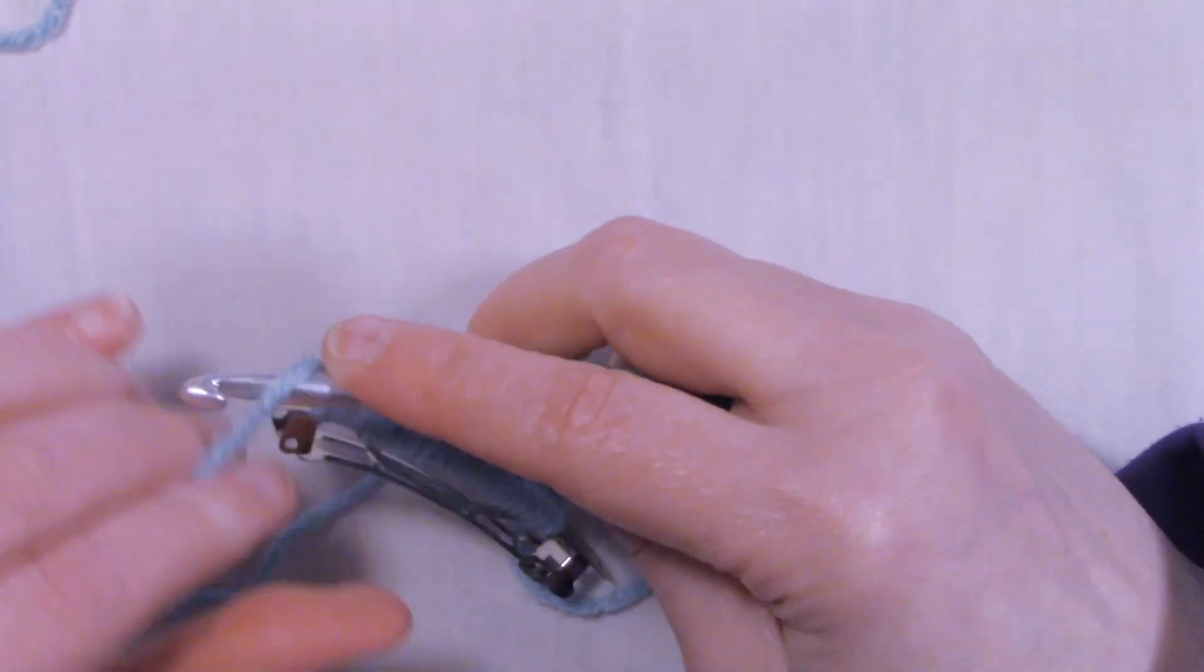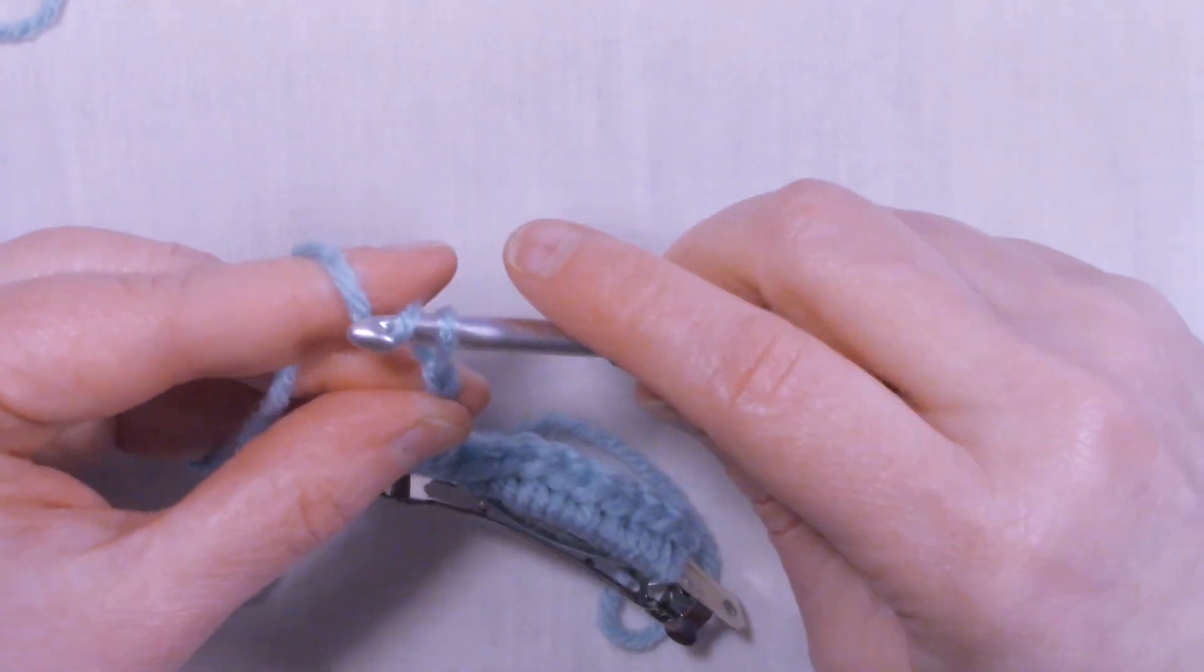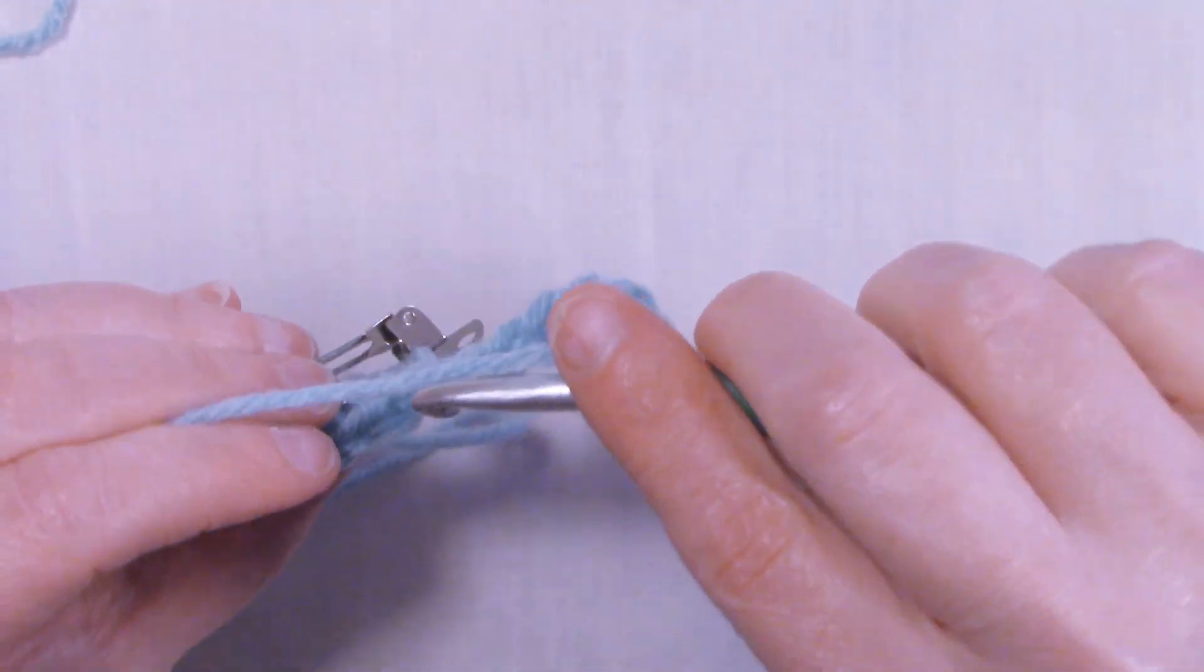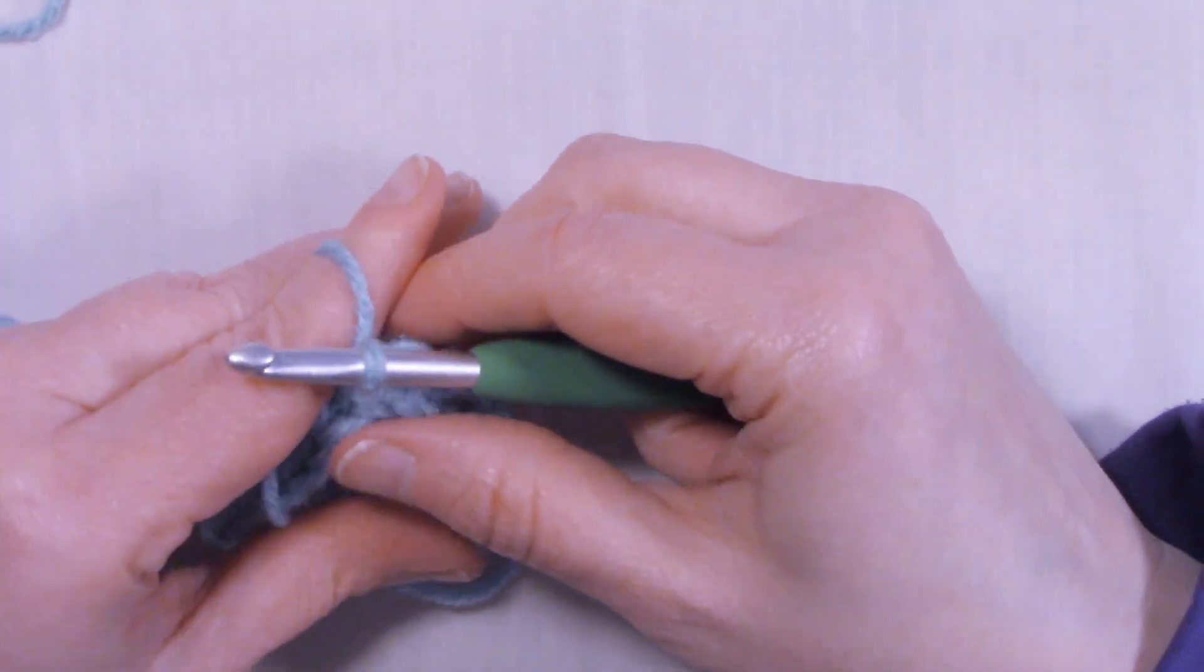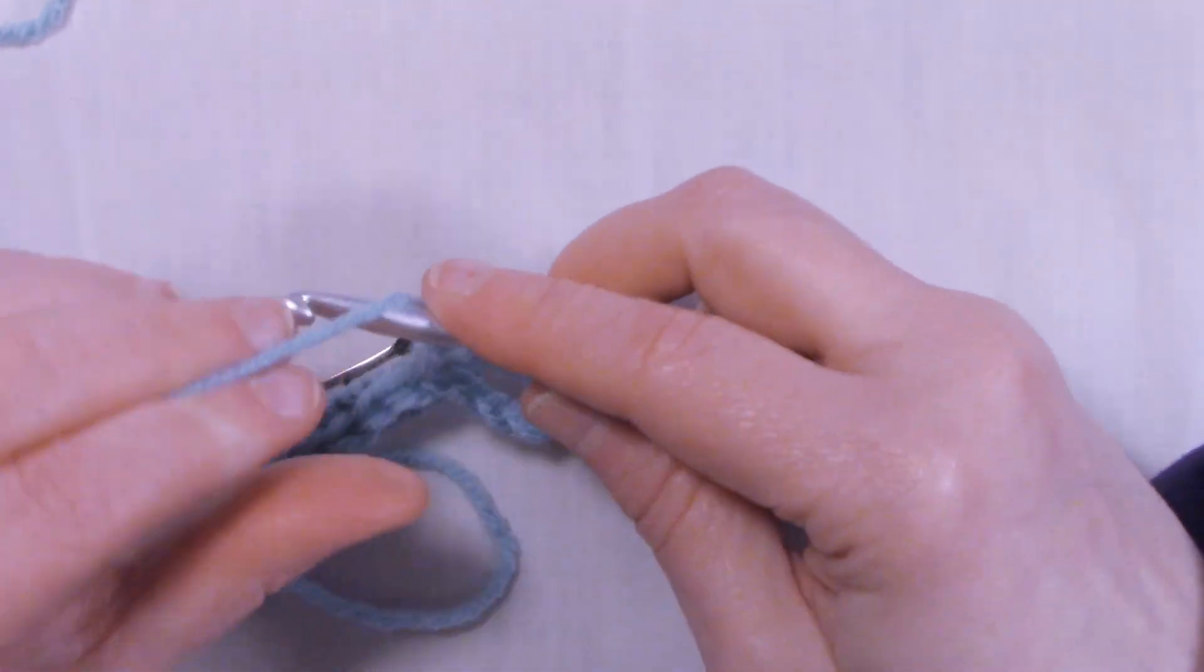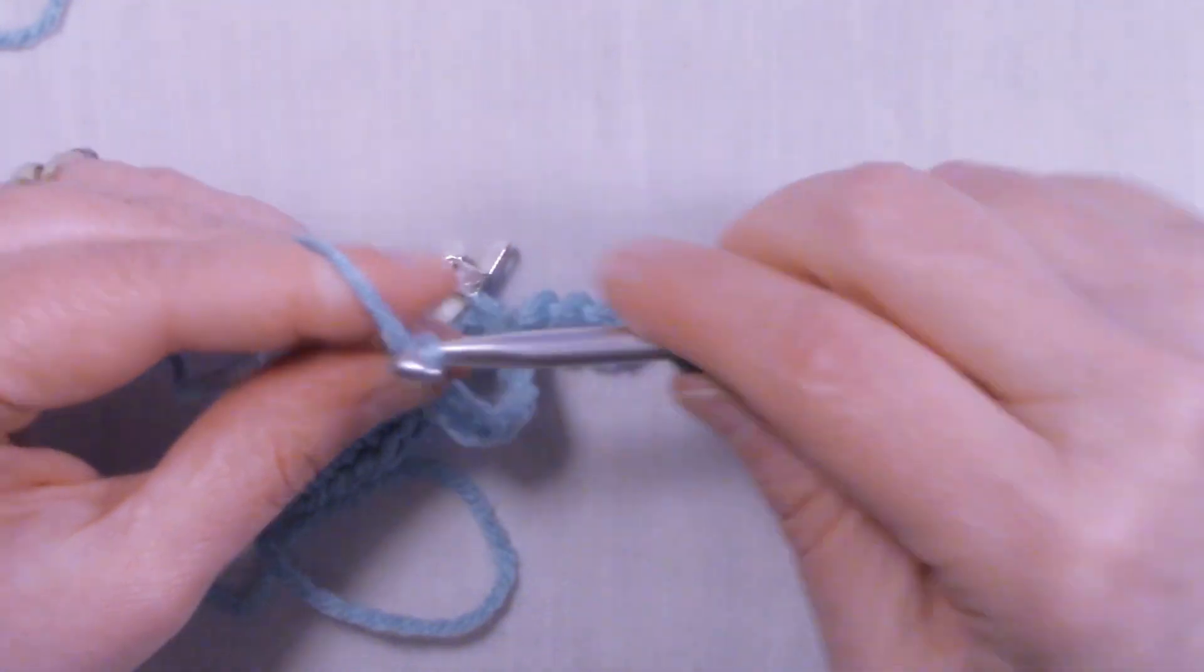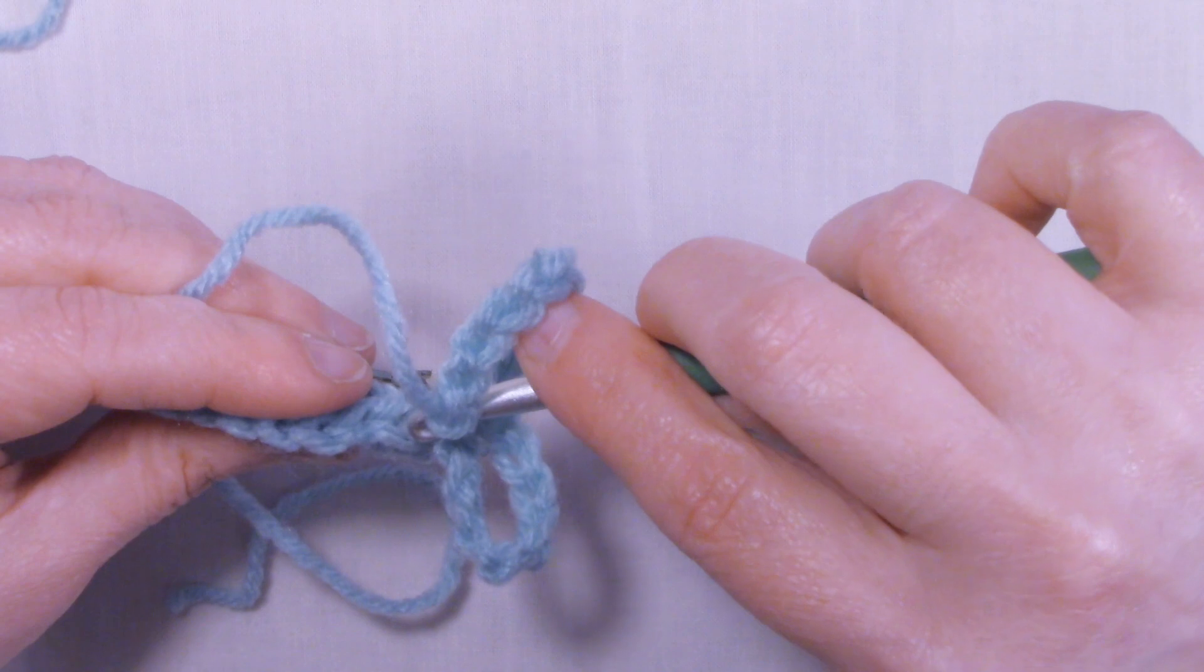Then we're going to chain 10, and we're going to slip stitch into the back loop of the first stitch, and chain 10 again.